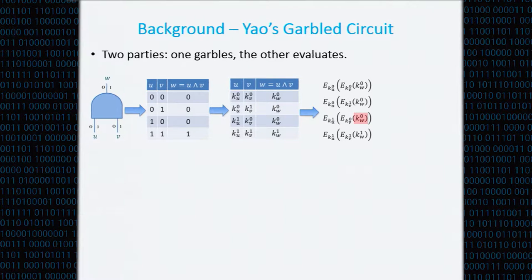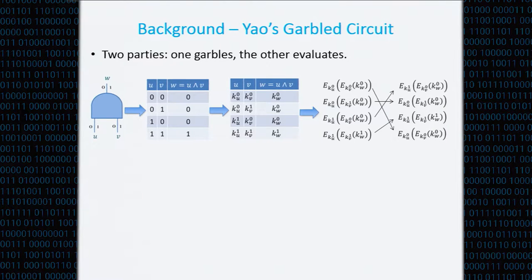During evaluation, the evaluator can decrypt using the keys of the input wires to receive the key of the output wire. For example, if the evaluator holds the keys 10 of the input wires, he can decrypt and recover the key 0 of the output wire. There is an obvious problem: if the evaluator knows which key he is holding, he also knows the value of the wire. The solution is that the rows were randomly permuted, and the evaluator just decrypts one row without knowing which one he decrypts.